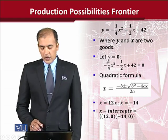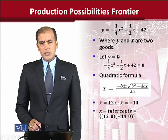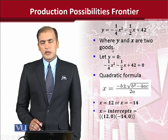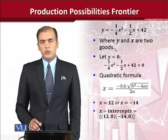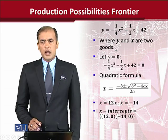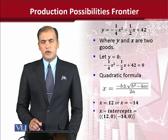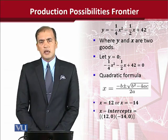Now let y equal 0. We assume that one of the variables is 0 because, in order to get the intercept, we have to put one variable equal to 0, and then the other intercept can be found by putting the other variable equal to 0.